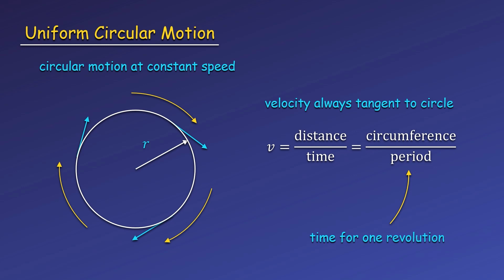We will represent this time with a capital T rather than a lowercase t. Putting this together, we get the tangential speed to be 2πr divided by the period.